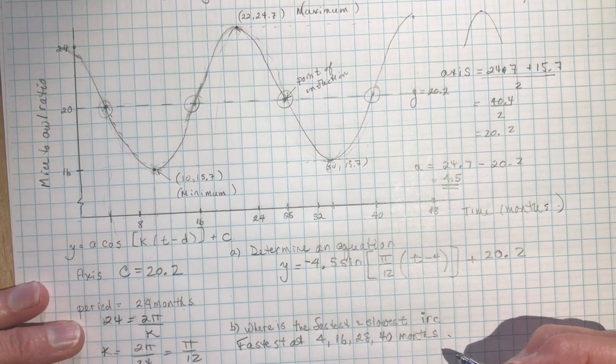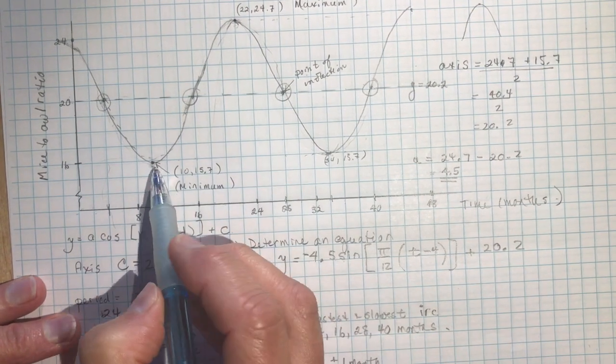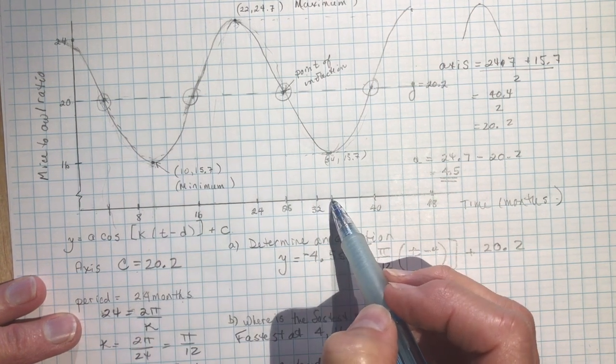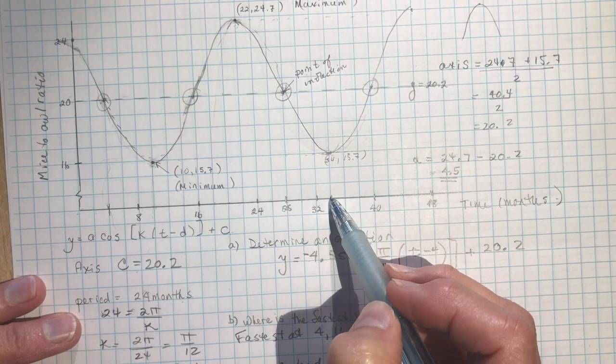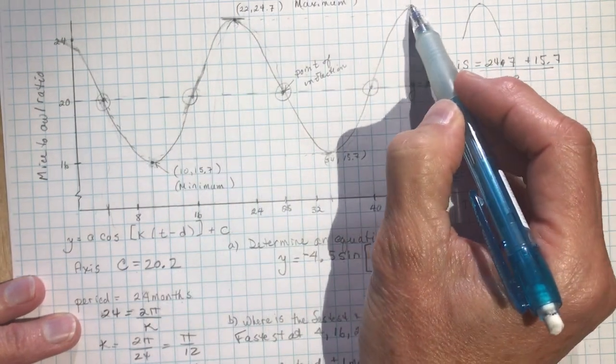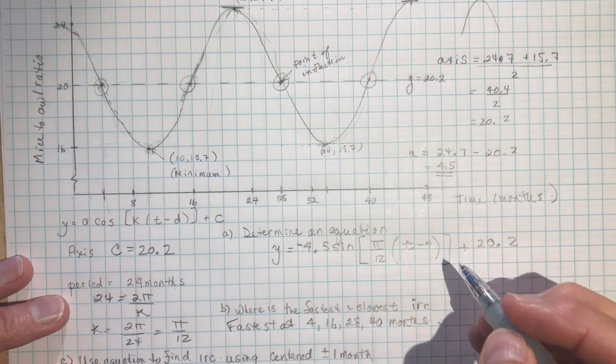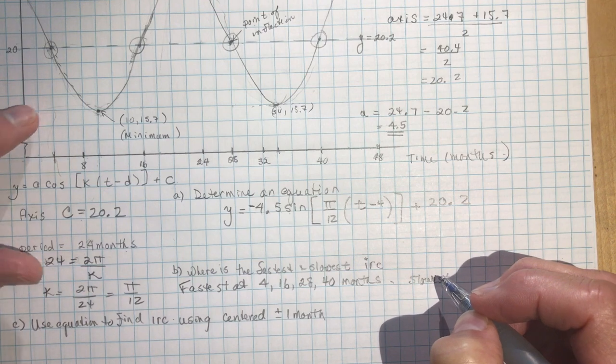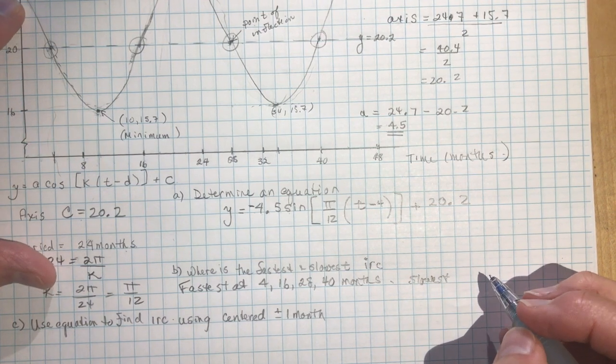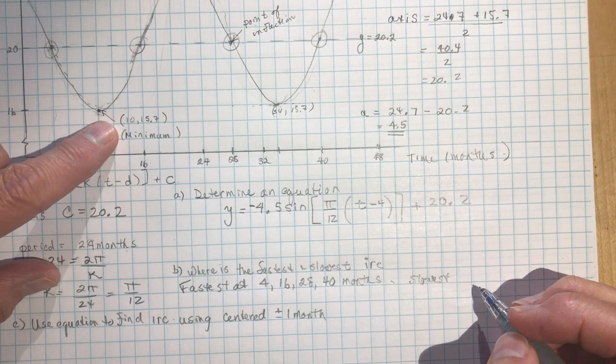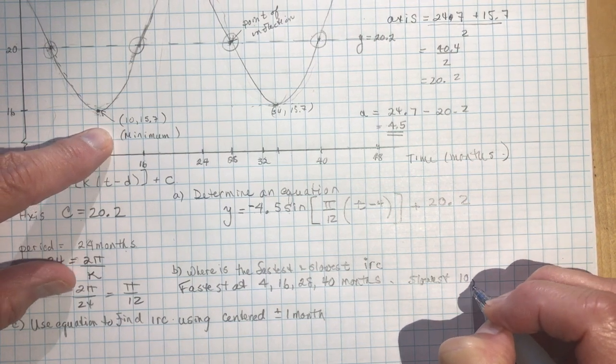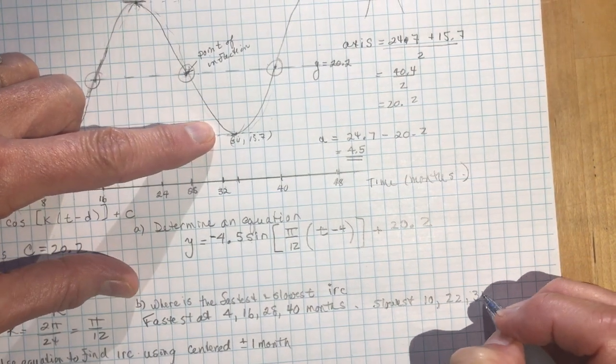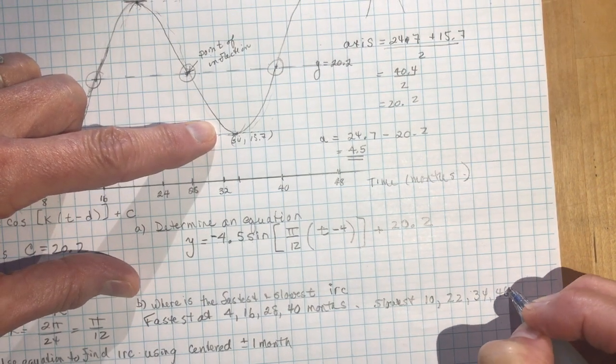Okay, where is it the slowest, so it's everywhere where it's zero, zero slope, so that would be here at 10, at 34, oh, forgot this one here, and this one here. Okay, so slowest, you can pick them up yourself here easily, this is not the slowest, because we're not at a peak, so we're going to say 10, 22, 34, and 48 months.